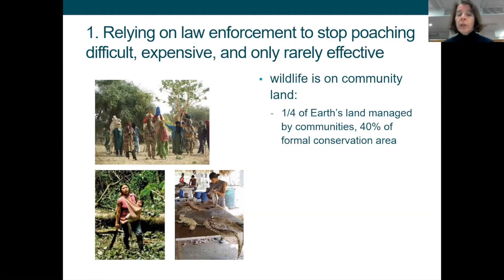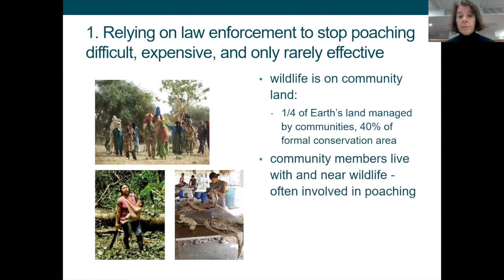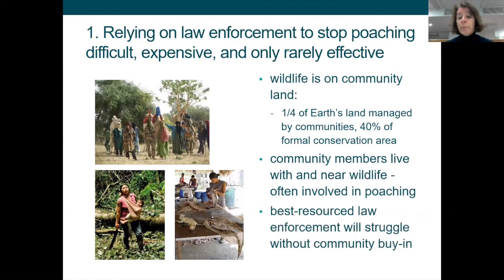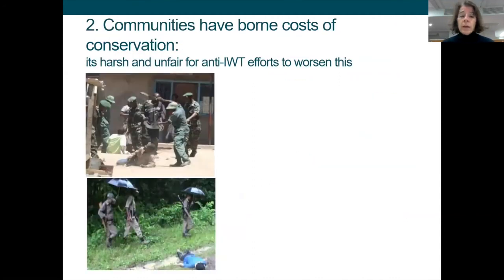It's important to remember that a huge amount of wildlife is on community land — not in government-controlled protected areas. One quarter of the earth's land is managed by communities, and forty percent of that is set aside as formal conservation areas. Community members who live with and near wildlife are often actually involved in poaching themselves. So even with the best resources, law enforcement will struggle without community buy-in because the wildlife is on their land and because they have a vested interest in being involved.